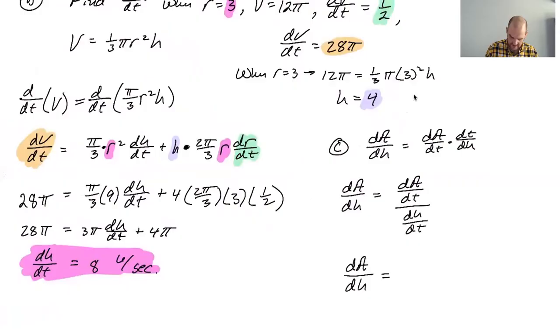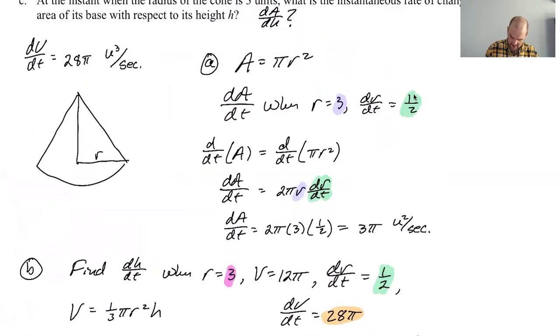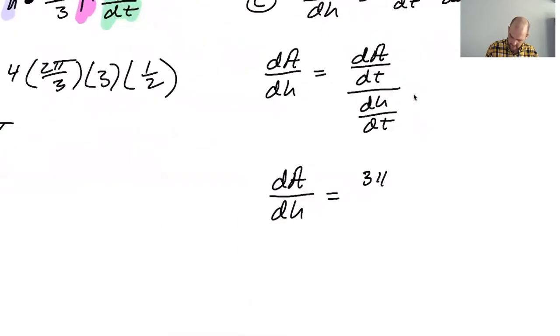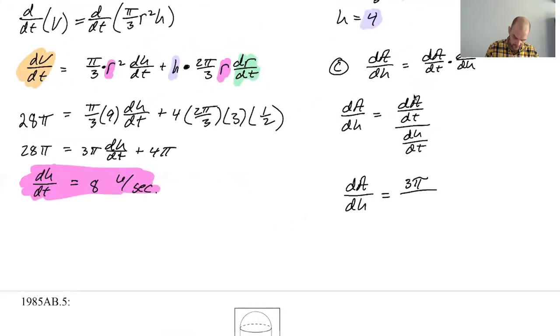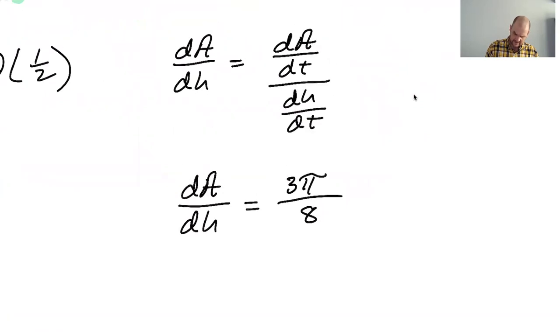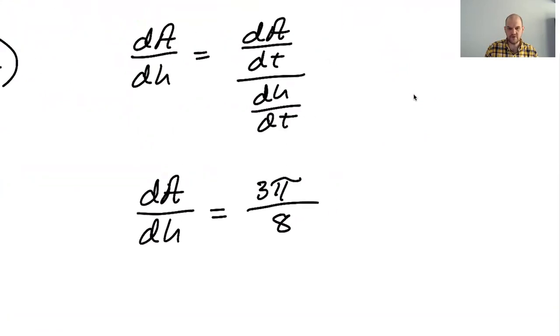I'm just going to plug in values now. So I think I know dA/dT because I think that was my answer to part A. That was three pi. So three pi over, I'm pretty sure dH/dT is my answer here. So over eight. So I think my final answer is three pi over eight units squared per unit.